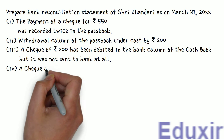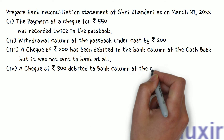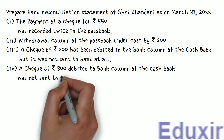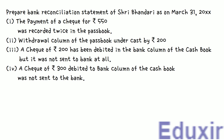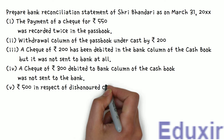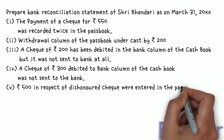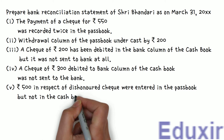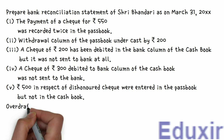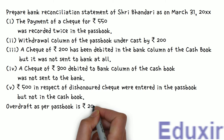4. A cheque of 300 rupees debited to bank column of the cashbook was not sent to the bank. 5. 500 rupees in respect of dishonored cheque were entered in the passbook, but not in the cashbook. 6. Overdraft as per the passbook is 20,000 rupees.